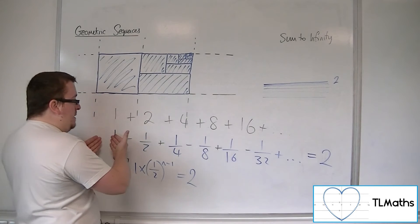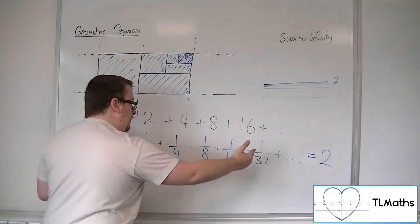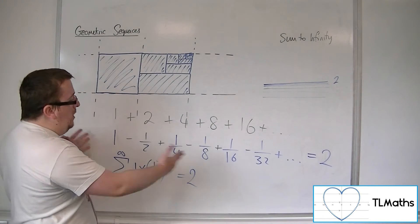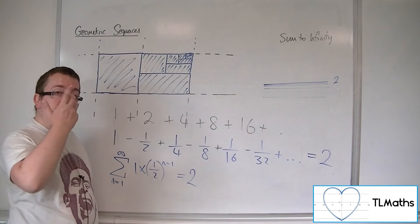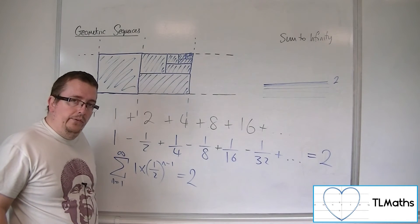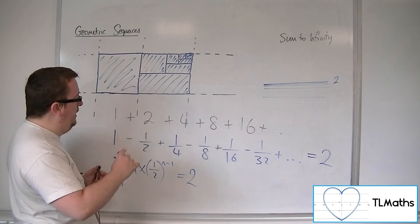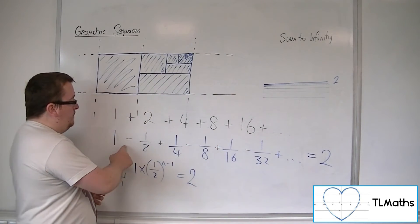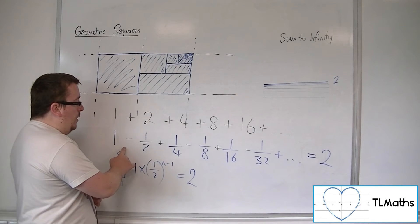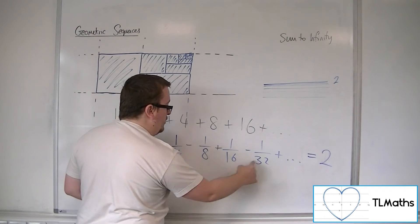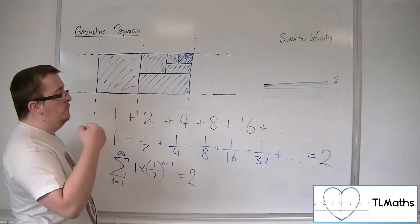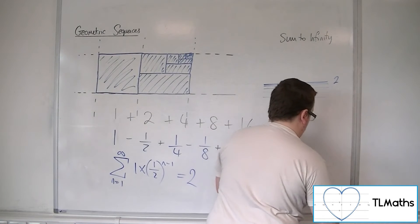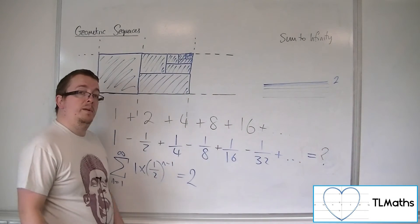We can envisage that this series isn't going to get larger than a certain value, and it will home in on a sum to infinity. We don't know quite what that is, but we can say that it would. So if my r was multiplying by minus a half each time — the common ratio was negative one half — we would also have a sum to infinity.